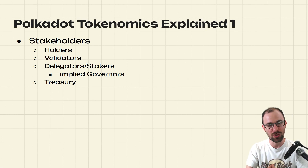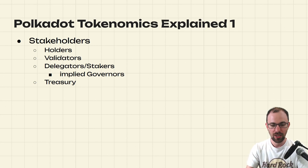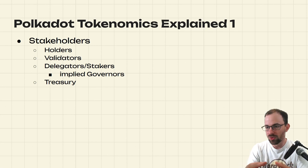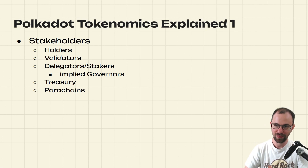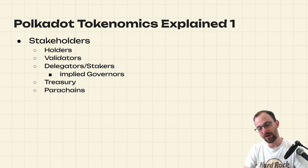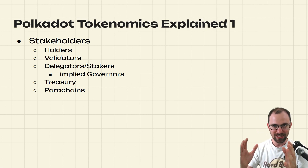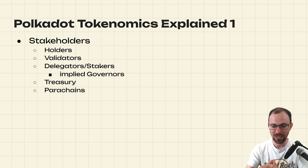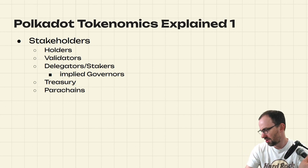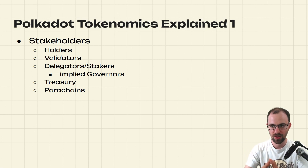Then there is the Treasury, which is controlled by governance and is spending DOT on different initiatives being proposed to the on-chain governance. And then there are parachains. At the moment, parachains are locking up DOT tokens in exchange for getting a secured allocation of block space, and they guarantee they can keep producing blocks in the ecosystem for 6 to 24 months.